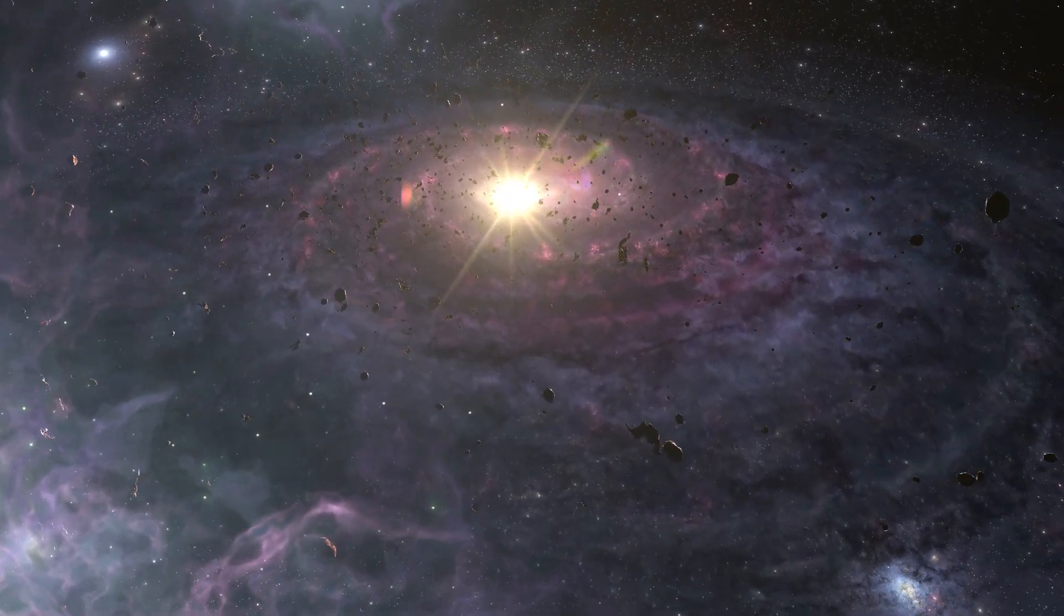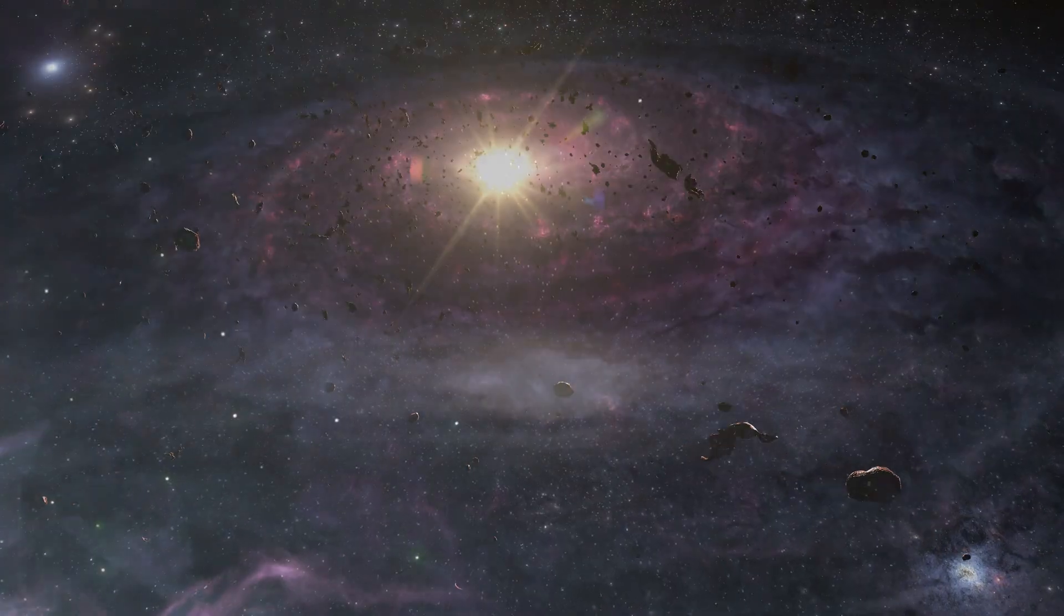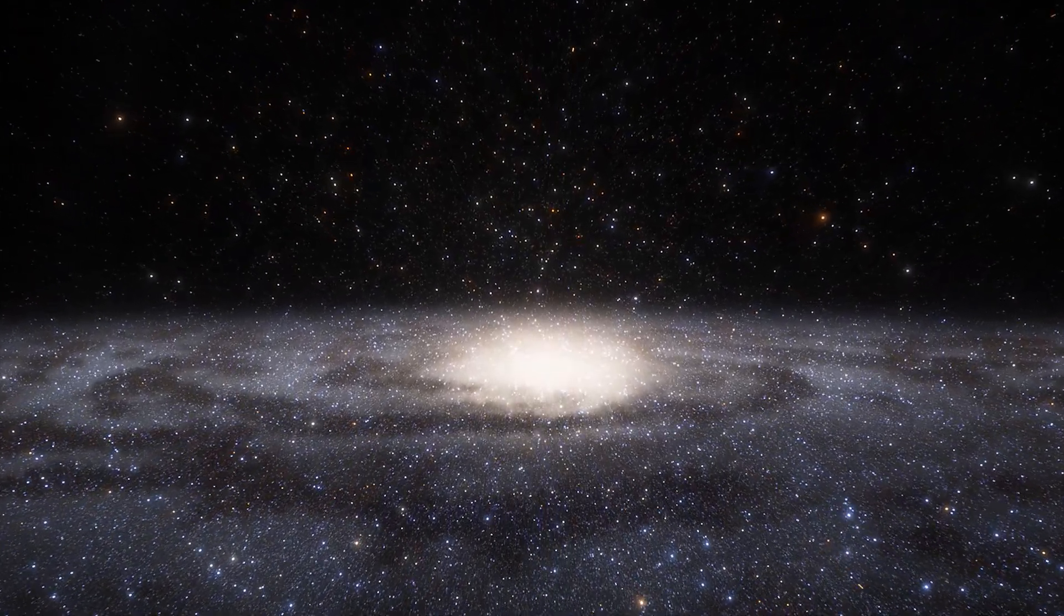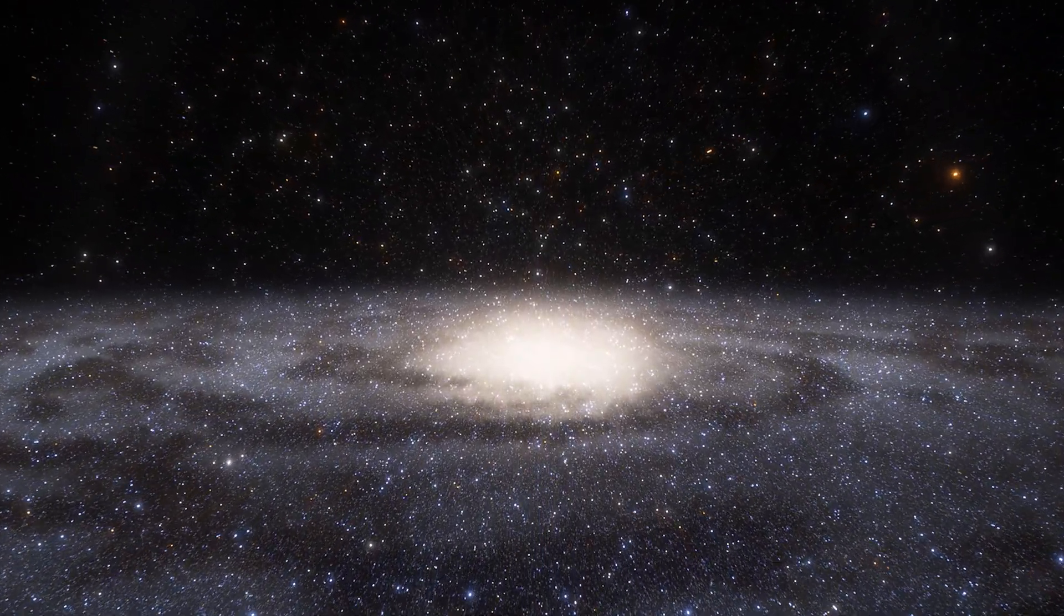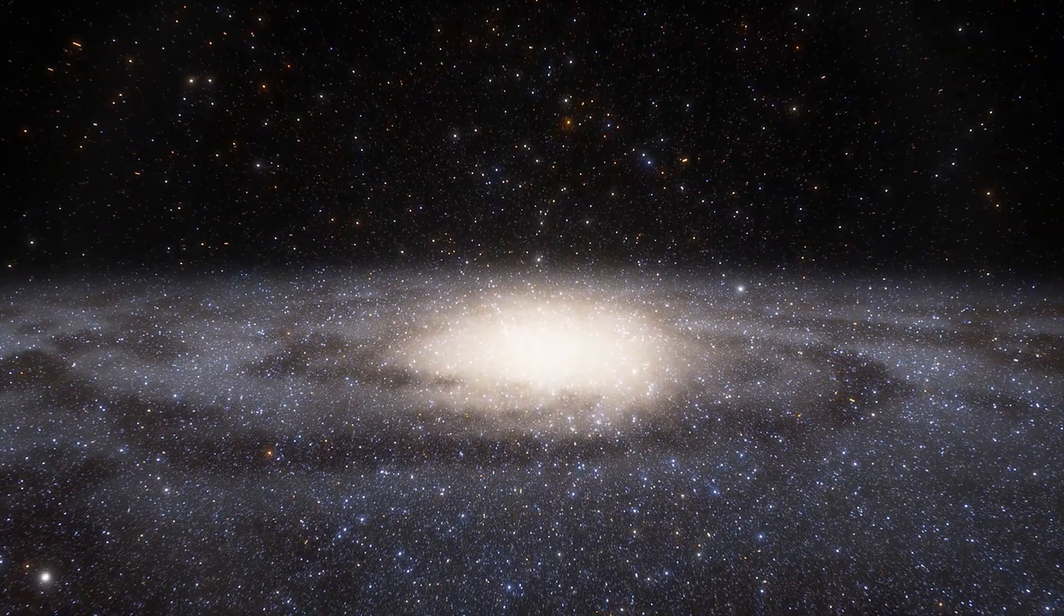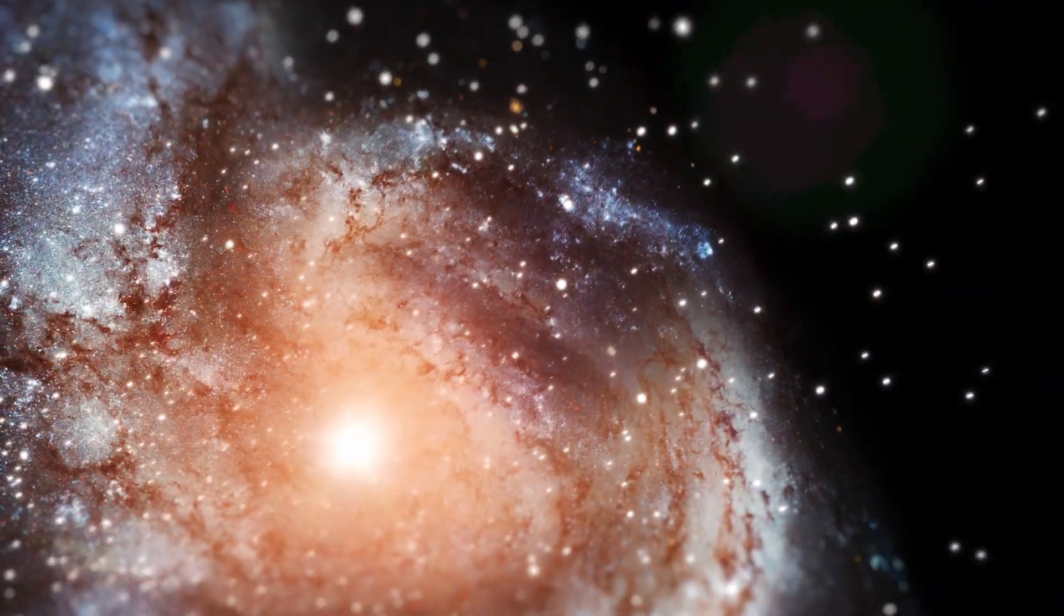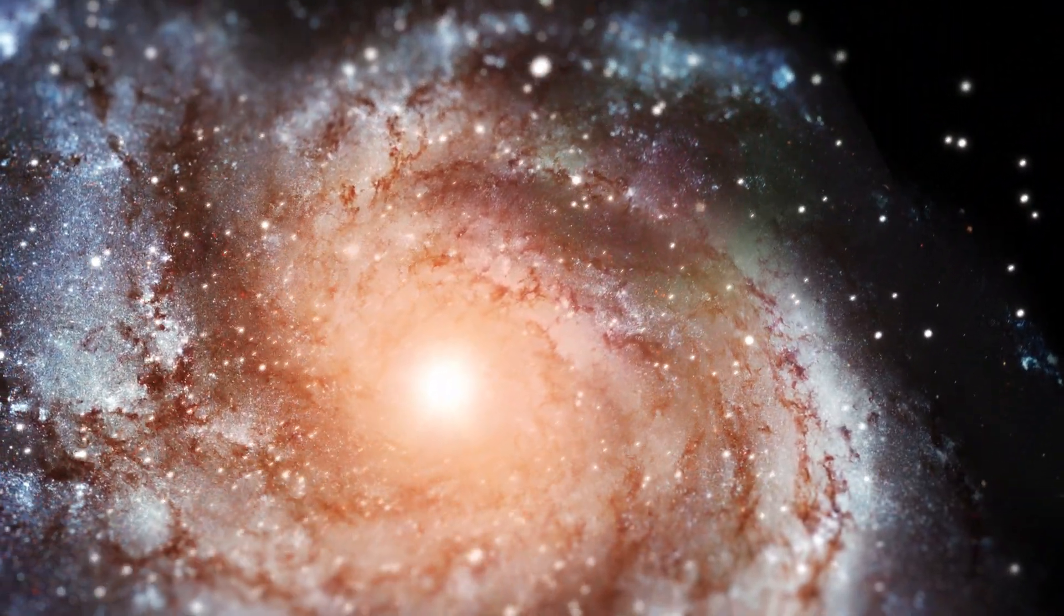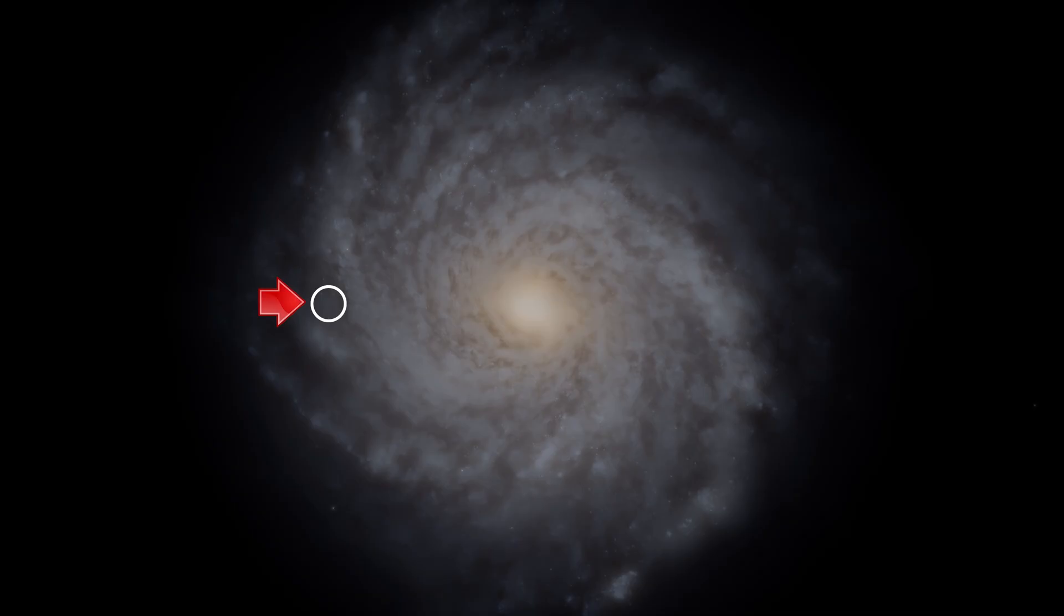This is the overall view of the Milky Way galaxy. The bright central region is the bulge which contains about one-quarter of the galaxy's total matter. The entire galaxy rotates around this bulge. Here is the location of the solar system. Let's zoom in on it.